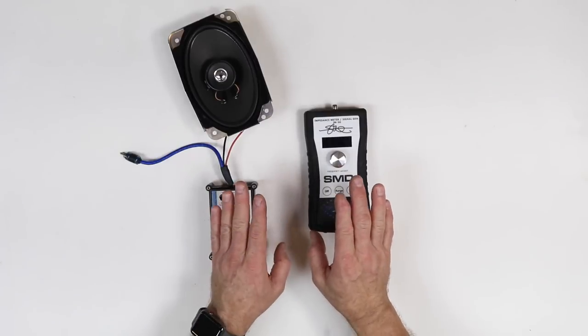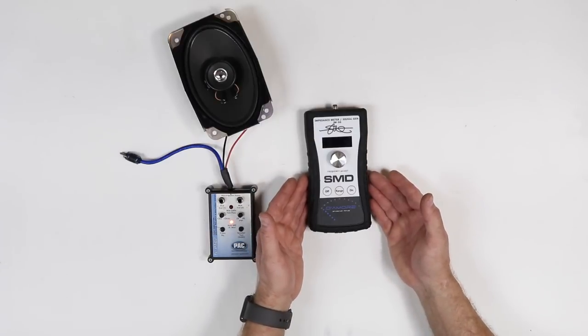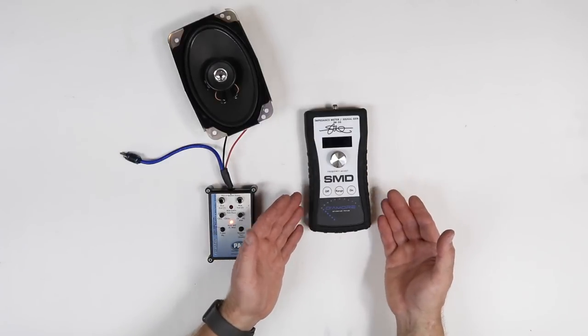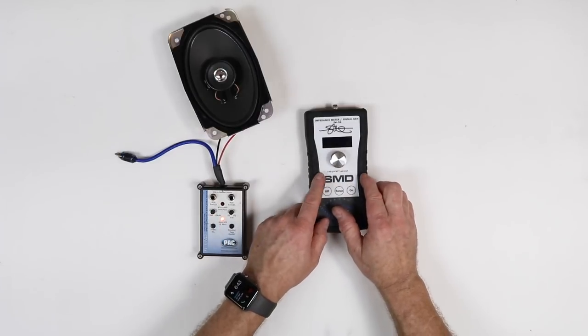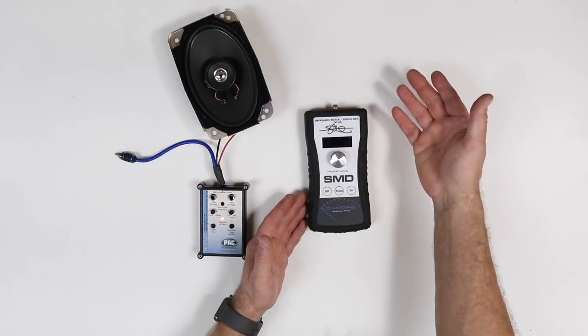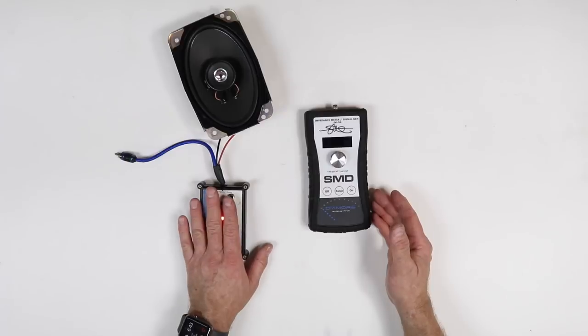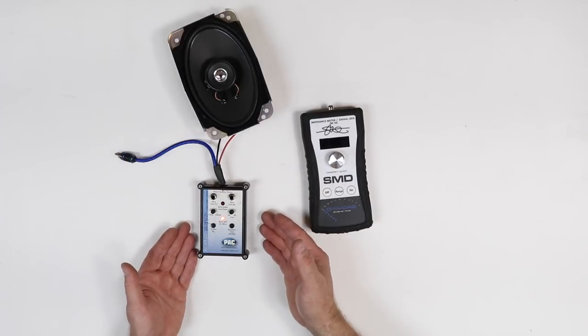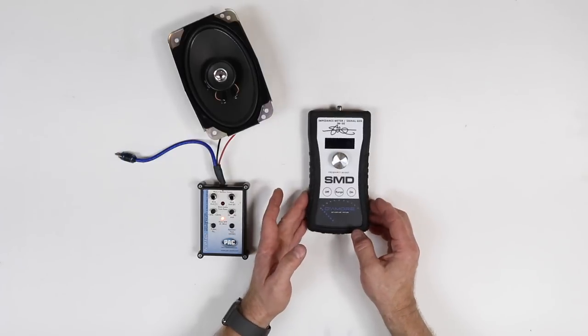Now, if you need the ultimate in clean and precision, that's where this guy comes in. The IMSG from SMD. This allows you to do similar things to this, but it doesn't have the output voltage to test the speaker. This is mainly made to go into the input of an amplifier. You can vary the voltage here. There's a lot of things you can do with this other than just testing. You definitely want to pick up one of these for sure. If you already have one of these, you may want to graduate into one of these guys here.